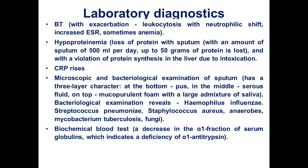Laboratory diagnosis shows changes in blood tests with exacerbation: leukocytosis, neutrophilic shift, increasing ESR, and sometimes anemia. Hypoproteinemia may also develop, resulting from loss of proteins through sputum and violation of protein synthesis in the liver due to intoxication. C-reactive protein rises. Biochemical blood tests may sometimes show decreased alpha-1 antitrypsin and decreased alpha-1 fraction of serum globulins.